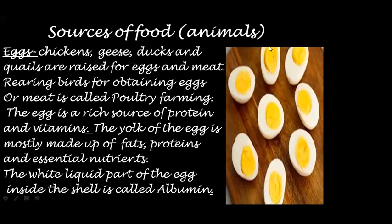Let's discuss about eggs. Chickens, geese, ducks and quails are raised for eggs and meat. Rearing birds for obtaining eggs or meat is called poultry farming. The egg is a rich source of protein and vitamins. The yellow part of the egg, called the yolk, is mostly made up of fats, proteins and essential nutrients. The white liquid part of the egg inside the shell is called albumin.